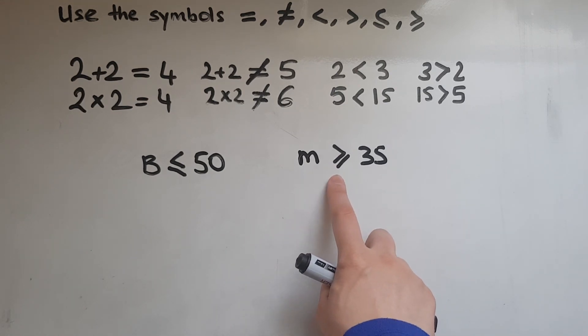And the greater than or equal to is there to suggest that the number has got to be bigger than or equal to. So that's the minimum that you can have.